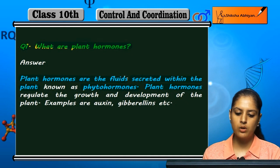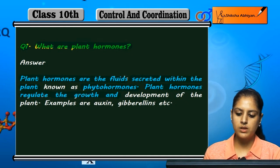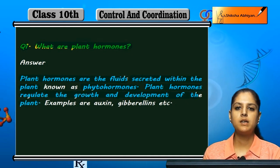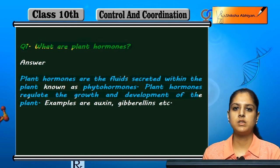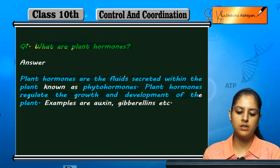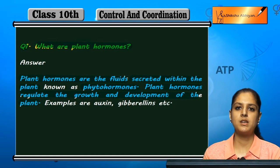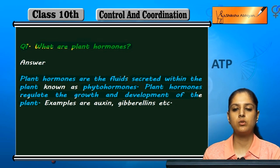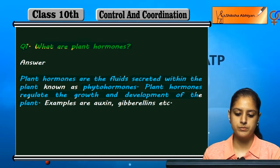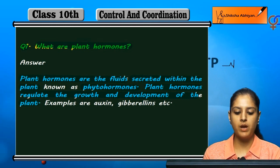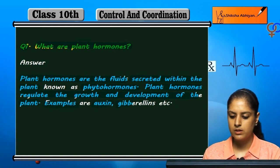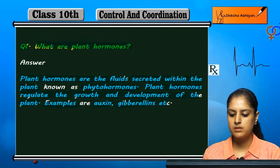Plant hormones regulate the growth and development of the plant. Some examples of plant hormones are auxin, gibberellins, etc.